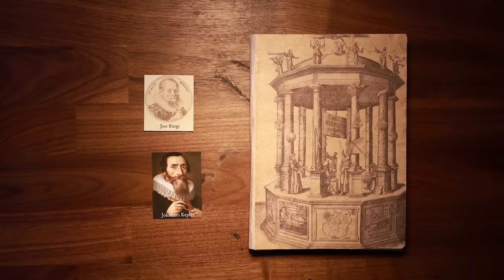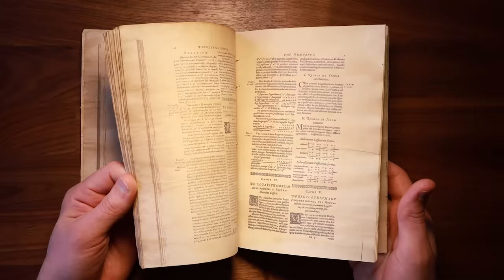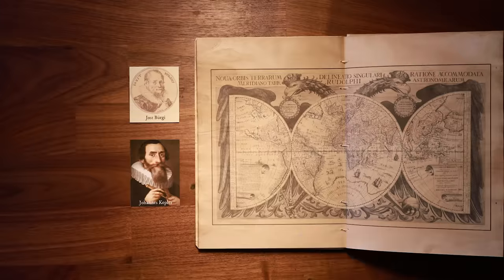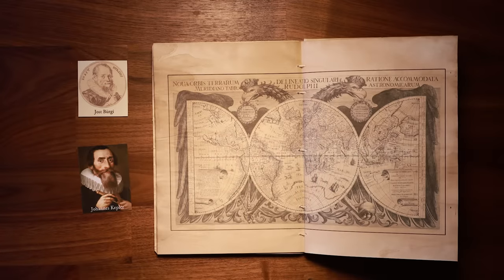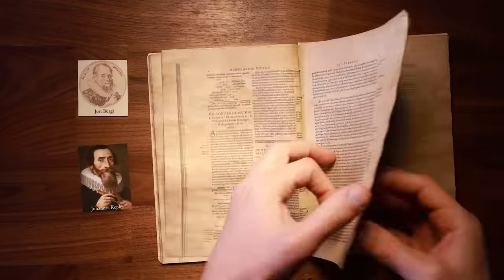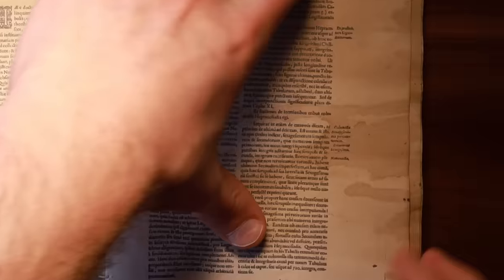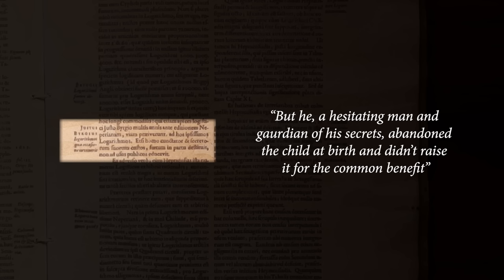At the time, Kepler was working on the Rudolfine tables, which gave equations and tables for the precise location of the stars and planets from anywhere on Earth, an enormous computational effort greatly aided by Berge's work. Kepler included this line in the final Rudolfine tables manuscript, expressing his frustration with Berge's decision not to publish.